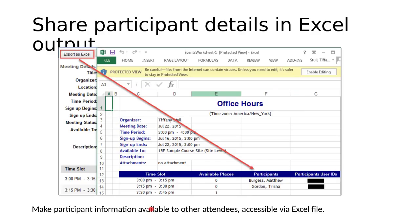You can share participant details in an Excel output file. One of the options when you create or edit the sign-up event is to allow participants to see other attendees' information. For example, if students can't normally see each other's email addresses, this is a way to allow group members to communicate with one another — they can go into the sign-up tool and export the event as an Excel file. You can also export events as calendar files to import into Outlook.